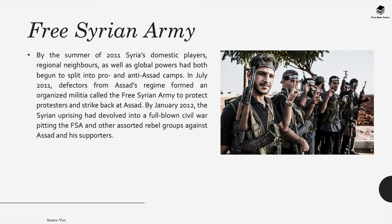By the summer of 2011, Syria's domestic players, regional neighbours as well as global powers had begun to split into pro- and anti-Assad camps. In July 2011, defectors from the Assad regime formed an organised militia called the Free Syrian Army to protect protesters and strike back at Assad. By January 2012, the Syrian uprising had devolved into a full-blown civil war, pitting the FSA and other assorted rebel groups against Assad and his supporters.